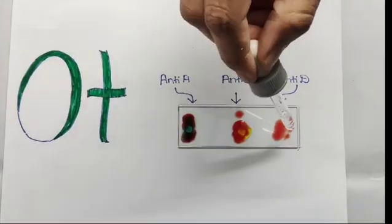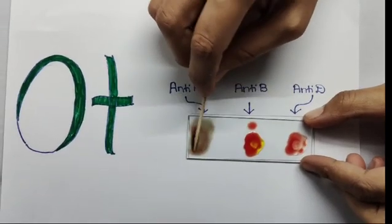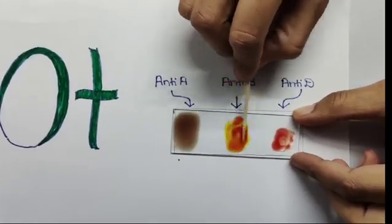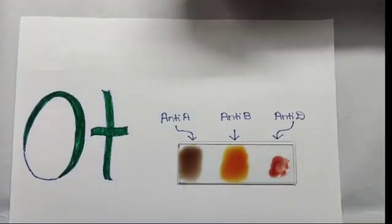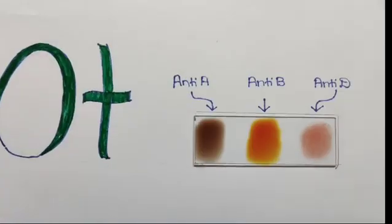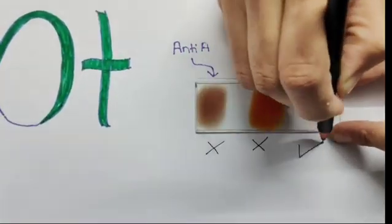Here, only clotting is seen in anti-D, which means Rh antigen is present. It is a positive blood group. Hence, the blood group determined is O positive.